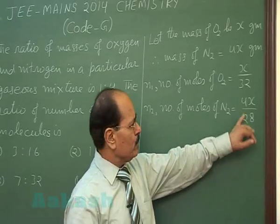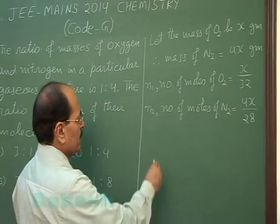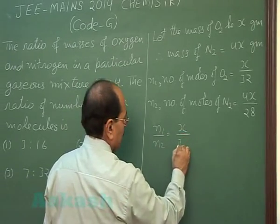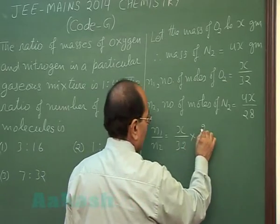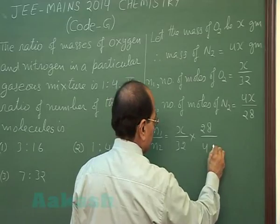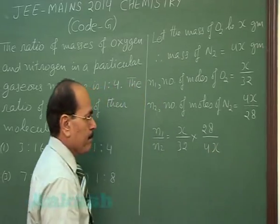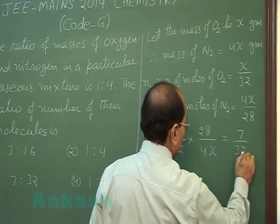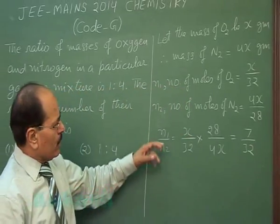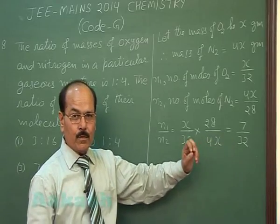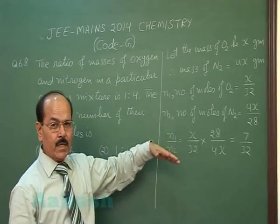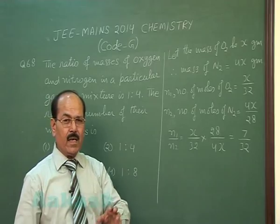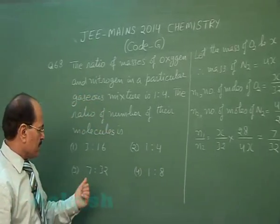28 is the molecular weight of N2. So N1 by N2 will be x by 32 into 28 by 4x. This comes out to 7 by 32. So molar ratio of oxygen to nitrogen is 7 is to 32. Whatever is the molar ratio of oxygen to nitrogen, that will be the molecular ratio because each mole contains Avogadro's number of molecules. So correct answer is option 3.